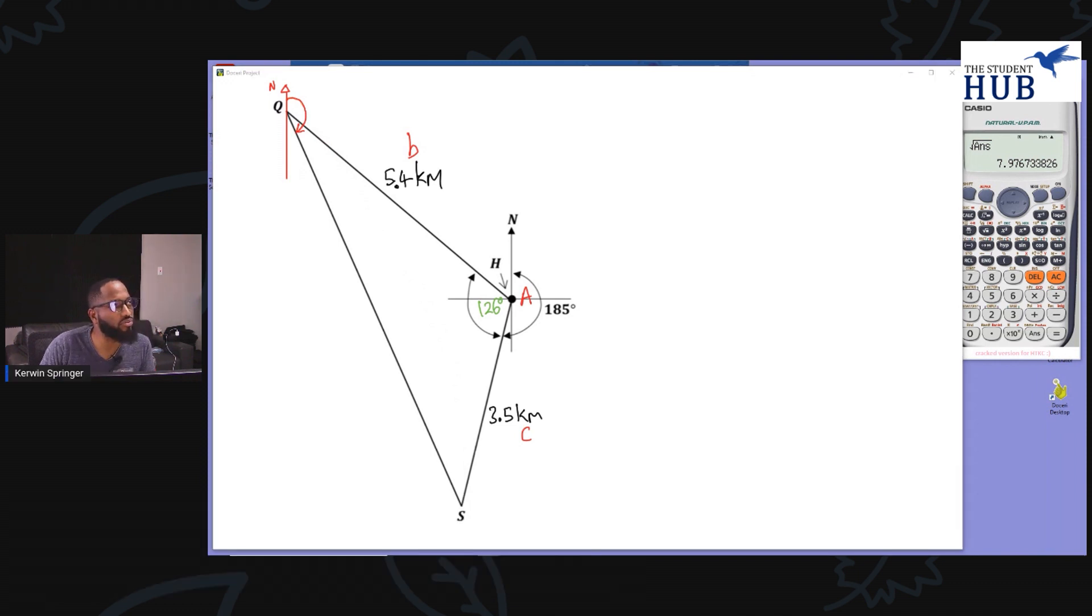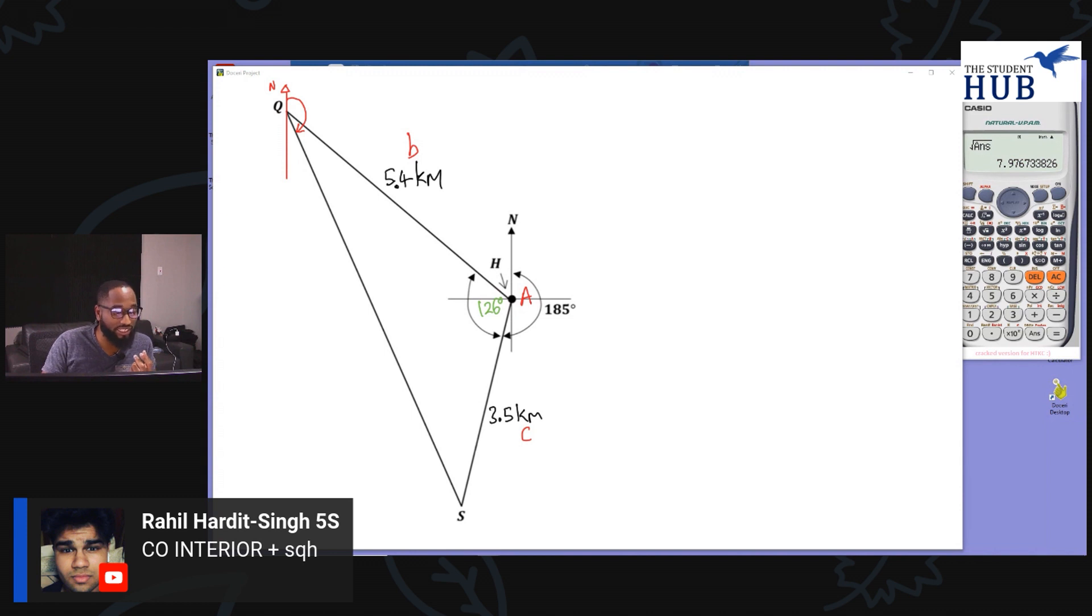That's the bearing of S from Q. So that's what we want to find. How are we going to find that? Sometimes these bearings questions can have you like, 'Whoa, what are we doing out here?' The clue I teach my class is extending and looking for alternate angles or co-interior angles, which is the key to cracking these bearings questions.